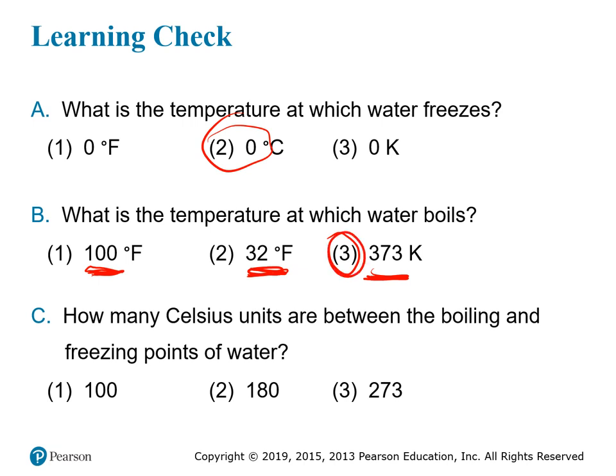The last question: how many Celsius units are between the boiling and freezing points of water? If your freezing point is at zero and your boiling point is at 100, then Celsius — also known as centigrade because of its 100 divisions — has 100 degrees between the two. So the answer is choice one.